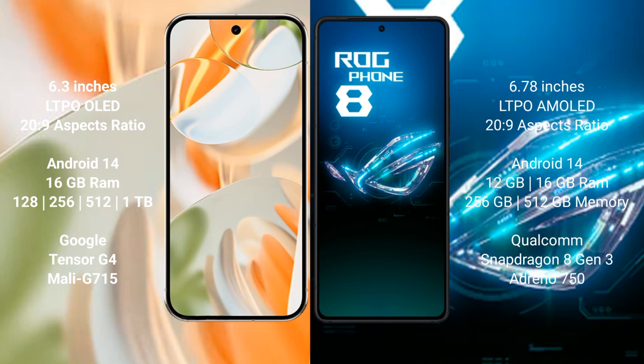The Google Pixel 9 Pro runs on the Android 14 operating system. The Asus ROG Phone 8 also runs on the Android 14 operating system. The Google Pixel 9 Pro comes with 16 GB RAM and storage options of 128 GB, 256 GB, and 512 GB.